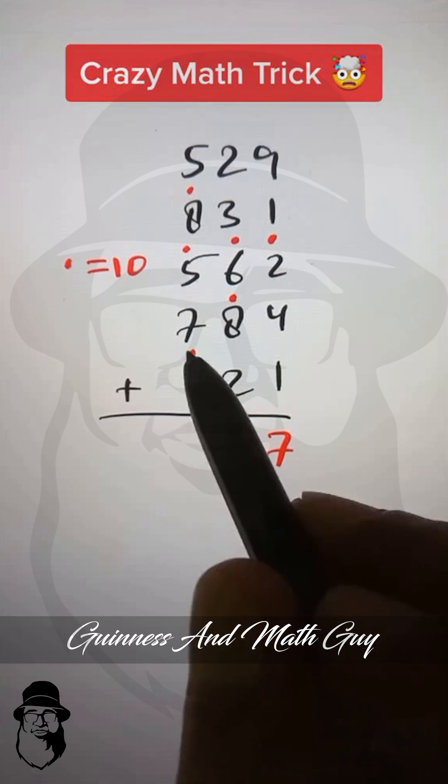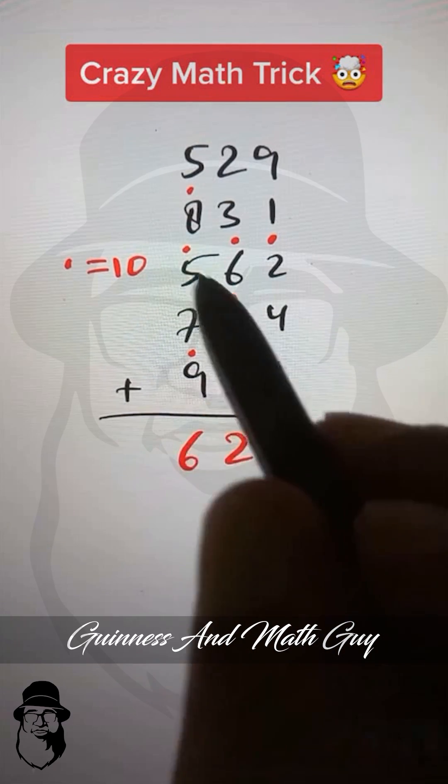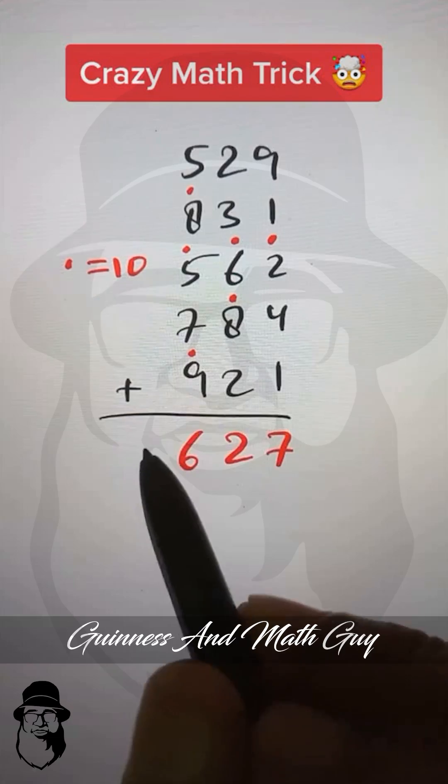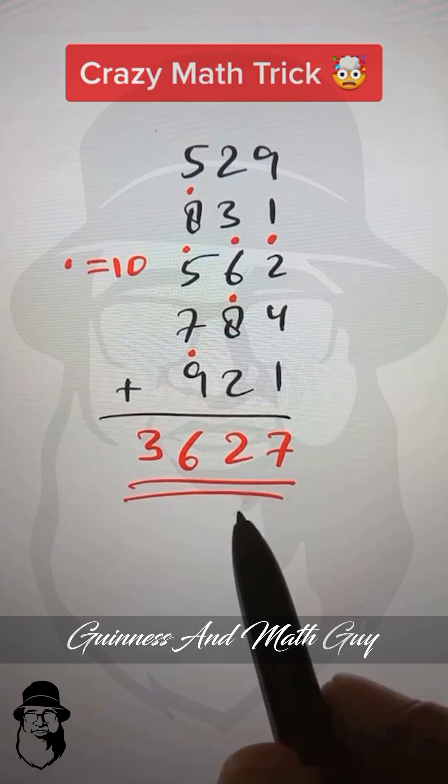...plus 9 is dot 6. We put dot and 6 here. Now we have only 3 dots in the end. We just write dots. That's our final answer. If you want to learn more tricks like this, there is a...